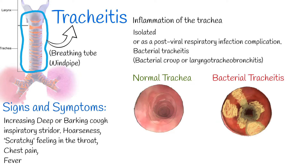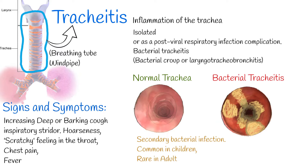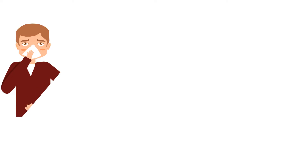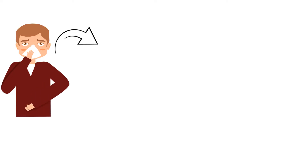Tracheitis is often a secondary bacterial infection preceded by a viral infection, affecting children most commonly under age 6. It can also be rarely seen spontaneously in the adult population and in tracheostoma-dependent patients of any age. When a person gets the flu or common cold, viruses can damage the tracheal mucosa, creating an environment for bacterial infection and bacterial growth.